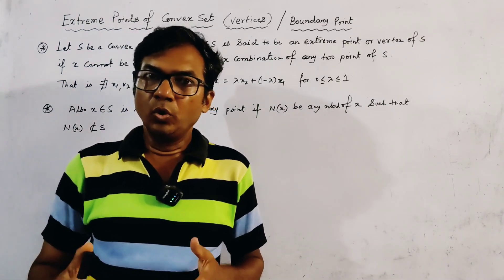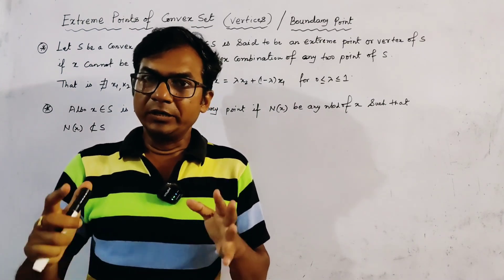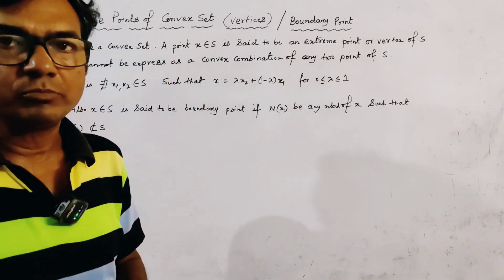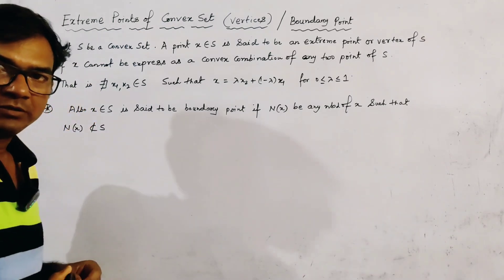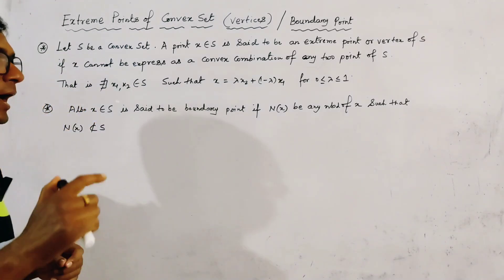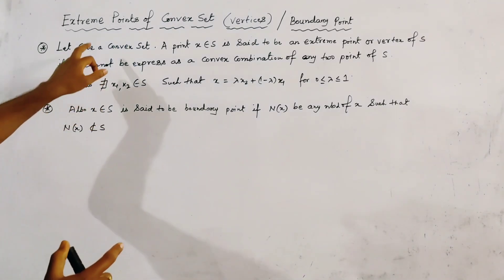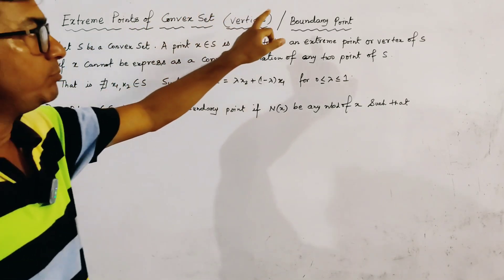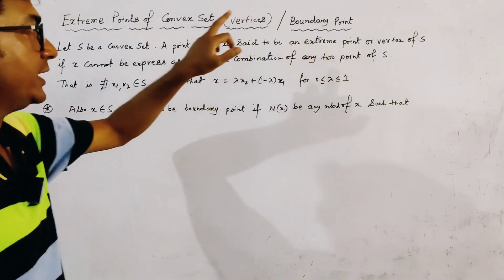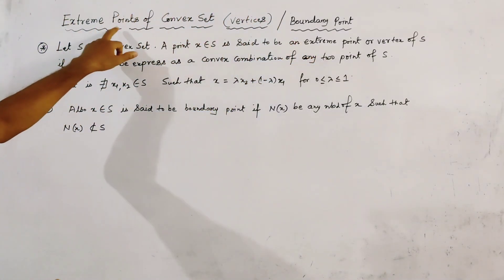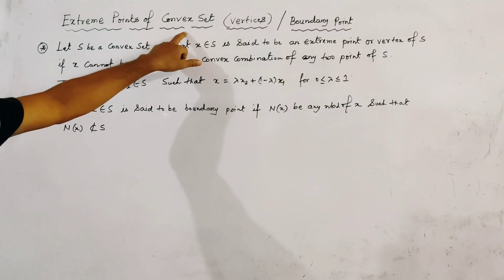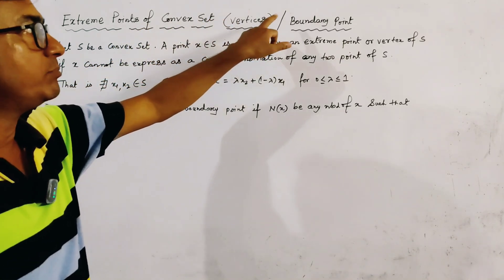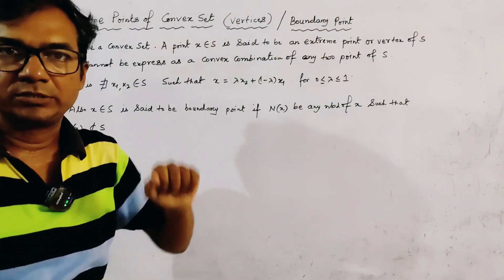In this lecture, we are discussing two important terms of LPP: extreme points and boundary points. That is, the extreme points of a convex set, which are also known as vertices, and the boundary point of a convex set.